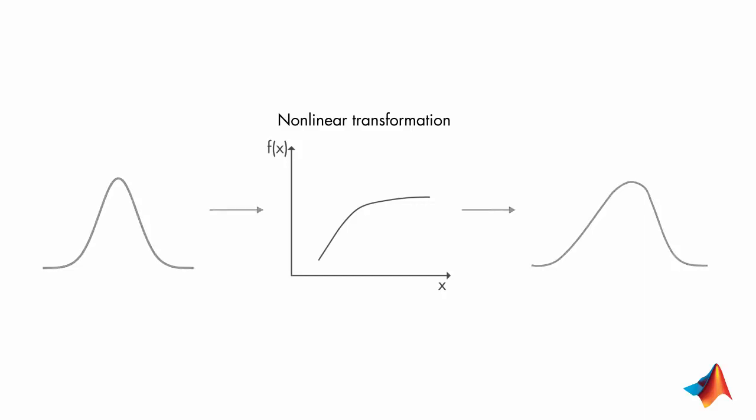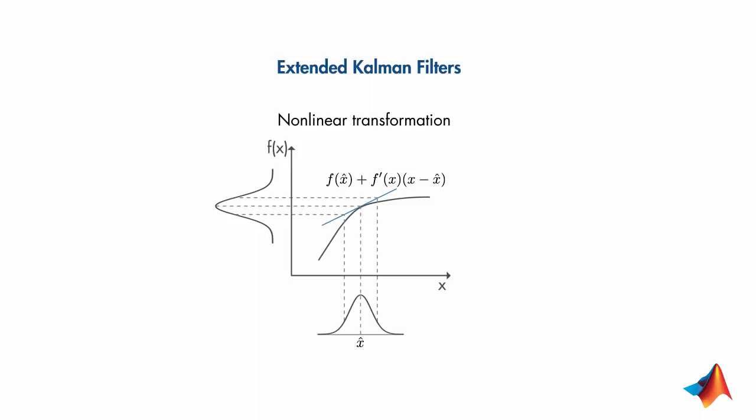In this case, you can implement an extended Kalman filter which linearizes the nonlinear function around the mean of the current state estimate. At each time step, the linearization is performed locally, and the resulting Jacobian matrices are then used in the prediction and update states of the Kalman filter algorithm.